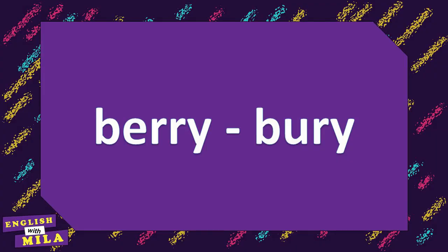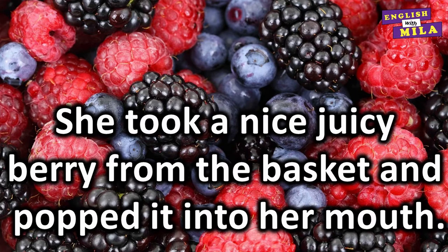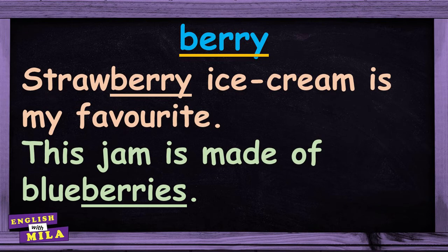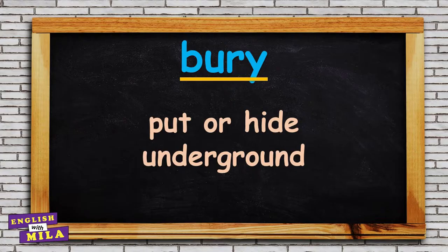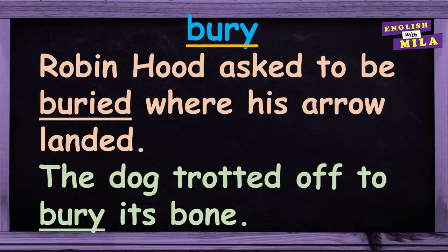Next pair: berry / bury. Berries are small round fruit that grow on a bush or a tree. For example: 'She took a nice juicy berry from the basket and popped it into her mouth.' 'Strawberry ice cream is my favorite.' 'This jam is made of blueberries.' And the second word of the pair is the verb 'to bury,' which means to put or hide something or someone underground. For example: 'They found a buried treasure in the garden.' 'Robin Hood asked to be buried where his arrow landed.' 'The dog trotted off to bury his bone.'